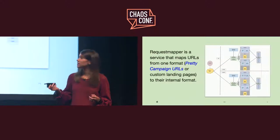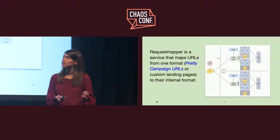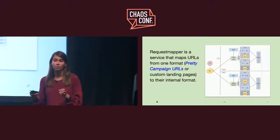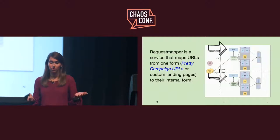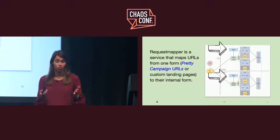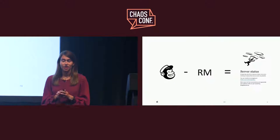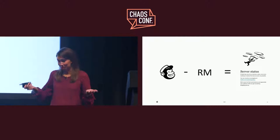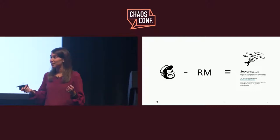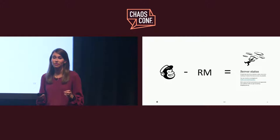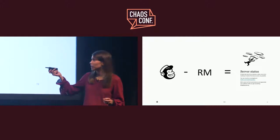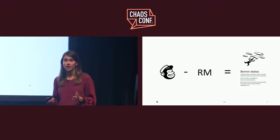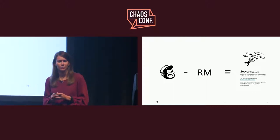The name of this system is request mapper. All it really does is map URLs from the pretty form we want our customers to see into the form that we store internally. The MailChimp monolith makes calls out to request mapper. So in our testing, we were able to recreate the incident — removing that connection between MailChimp and request mapper did, in fact, result in this load balancer error page getting displayed. We devoted the rest of this game day to digging in and trying to figure out exactly what was happening.